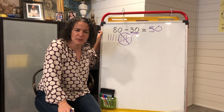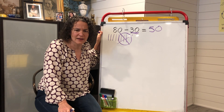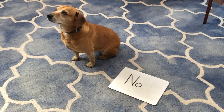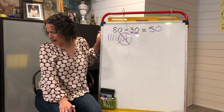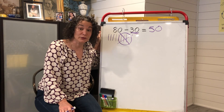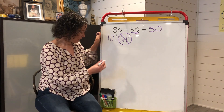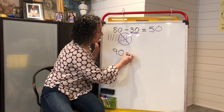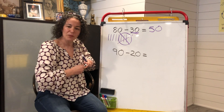Let's try another one. Can you give me two numbers? I got 20 and 90. Can I do 20 minus 90? Penny says no — when you subtract, the bigger number goes first. So I can't do 20 minus 90. I've got to do 90 minus 20. Let's try that. What should I do first?